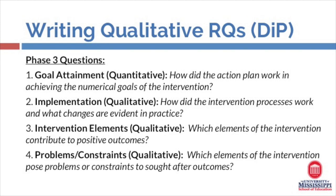Question two focuses on implementation and can be phrased: how did the intervention process work and what changes are evident in practice? This question should be modified to speak to the particular intervention or program you look to evaluate and implement. Question three focuses on intervention elements and is phrased as: which elements of the intervention contribute to positive outcomes? And finally, question four addresses problems and constraints: which elements of the intervention pose problems or constraints to sought-after outcomes?